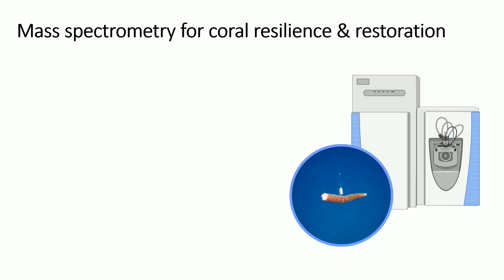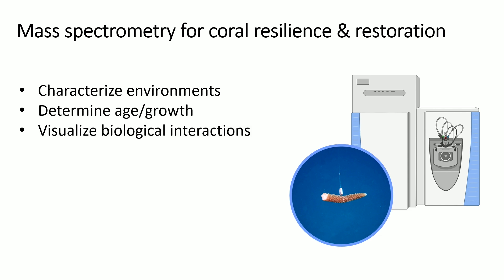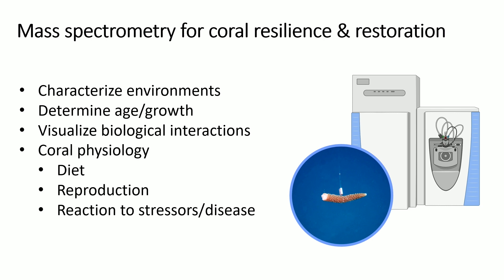While mass spectrometry might seem like a weird thing to be talking about at a coral conference, it can actually provide a lot of intel for coral resilience and restoration. For example, it can help us further characterize environments looking at different chemical or biological contaminants. It can help us visualize the interactions between different coral colonies or between corals and their symbionts. It can also give us a better understanding of coral physiology — looking into their diet, reproductive cycles, or their reaction to various stressors — which can give us important information to help fuel some of the models we've been hearing about this morning.